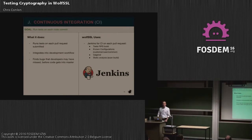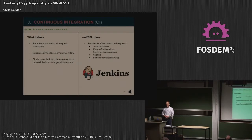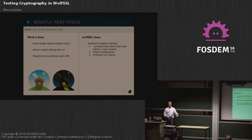We do continuous integration testing using Jenkins. On each pull request we run our CI, which includes our FIPS build, a known configurations test covering common and user configurations, our Valgrind memcheck tests, and our static analysis scan-build. All of these run on the pull request before it gets assigned to another developer for review.